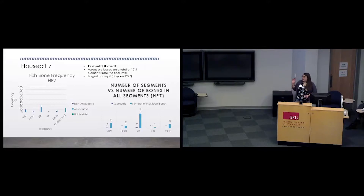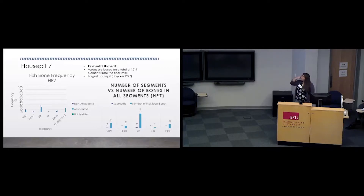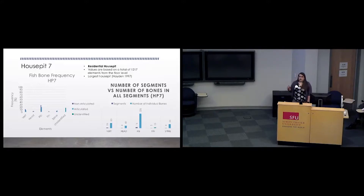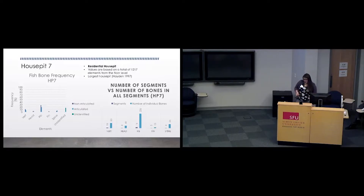You can see their frequency by overall percentage in the sample on the right. On the left is the number of articulated segments found in dark blue, and then the number of individual bones that make up the overall number found in those articulated segments.